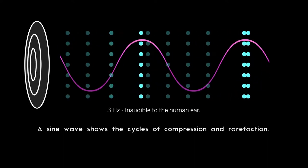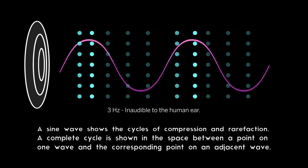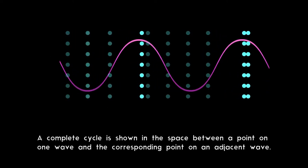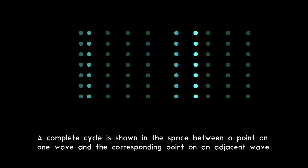A sine wave shows the cycles of compression and rarefaction. A complete cycle is shown in the space between a point on one wave and the corresponding point on an adjacent wave.